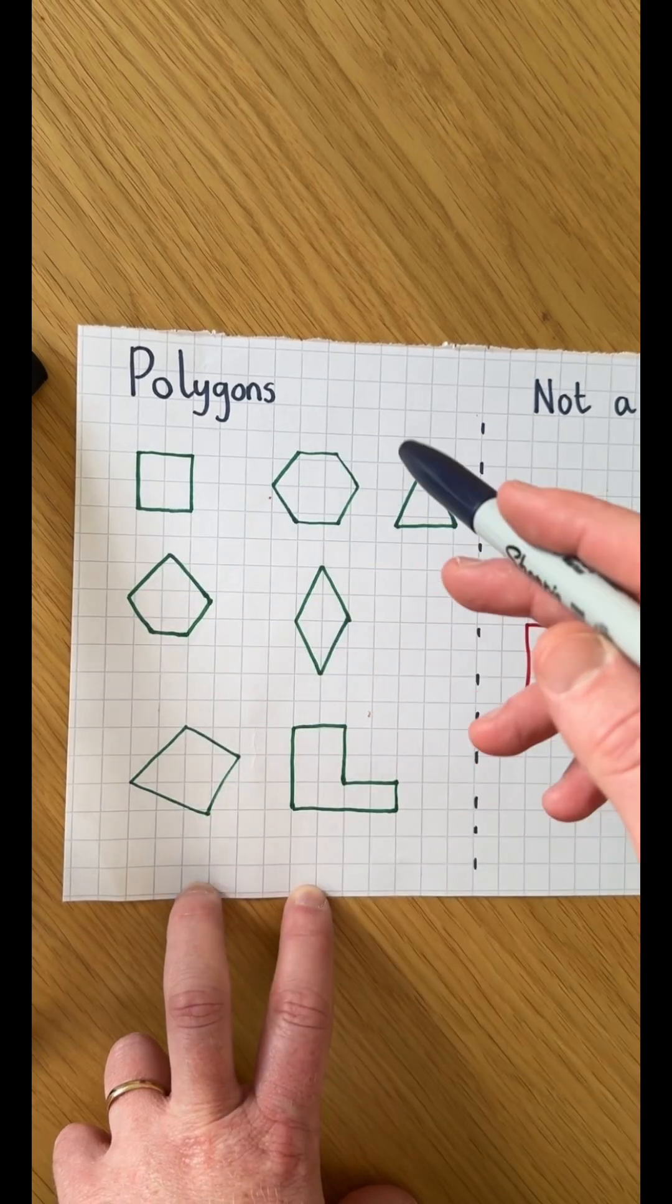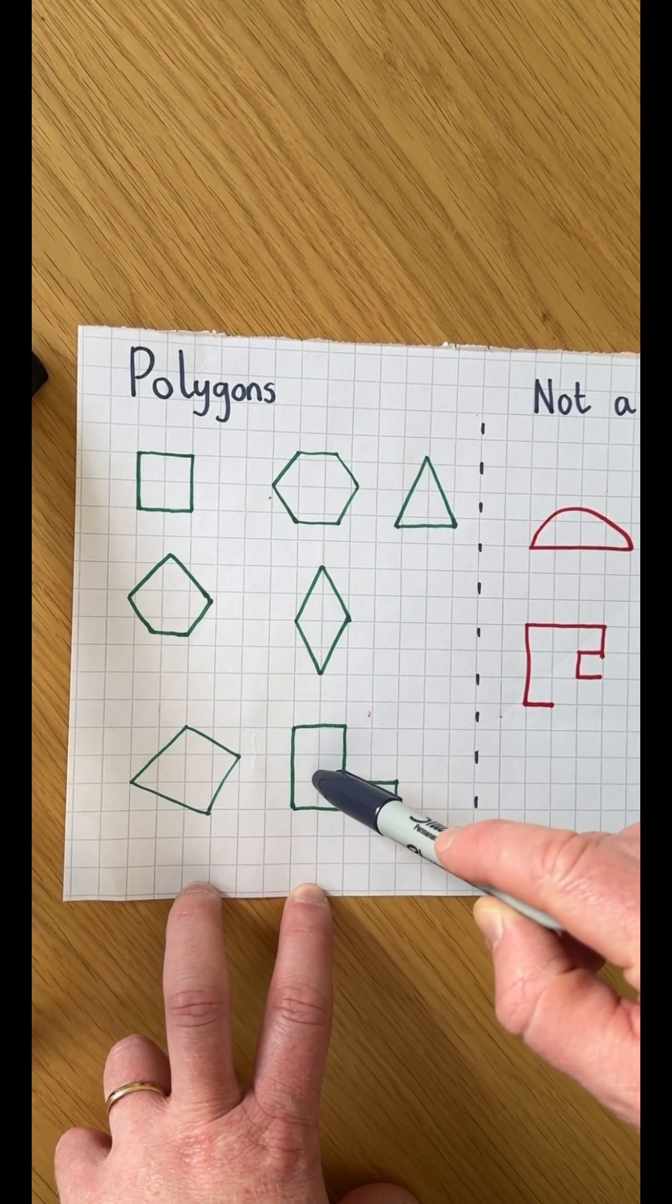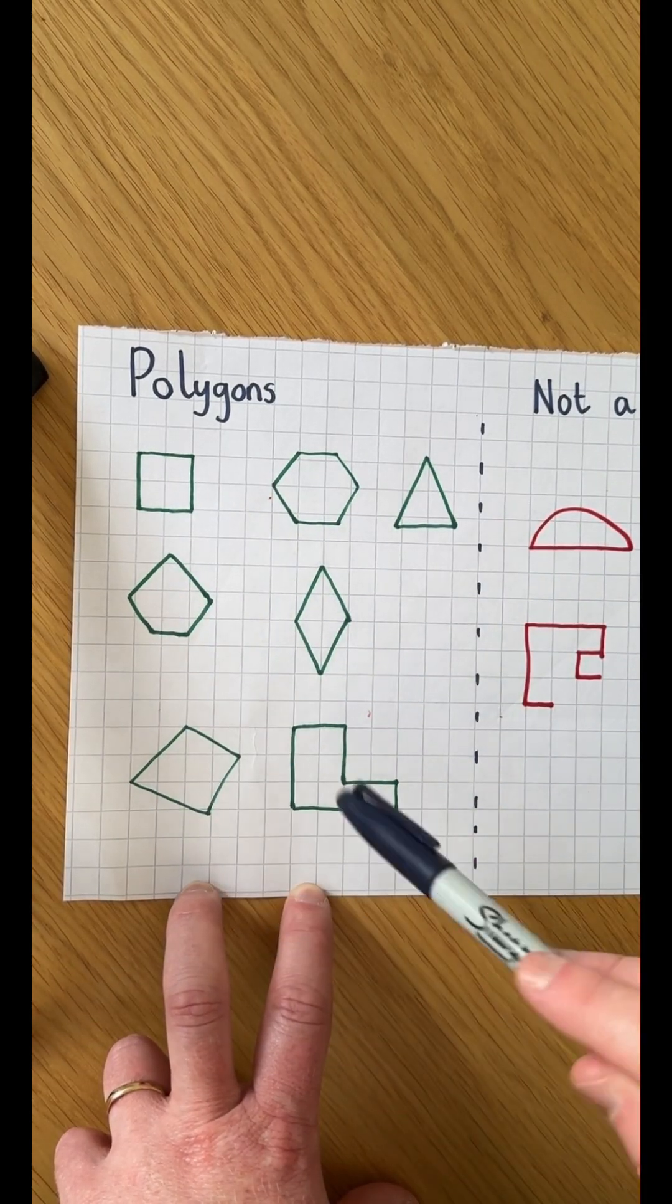Polygons can be separated into regular polygons and irregular polygons. All of these shapes have straight sides.